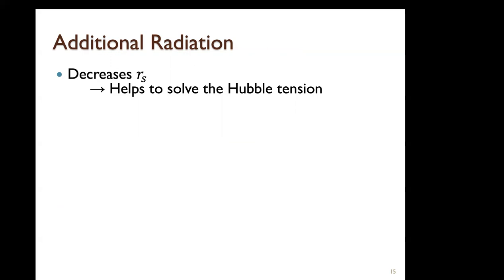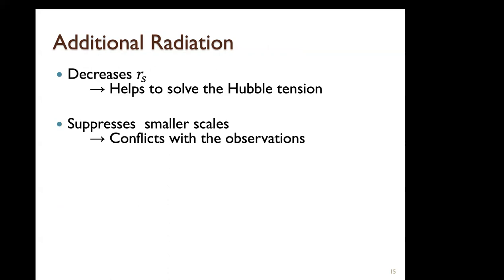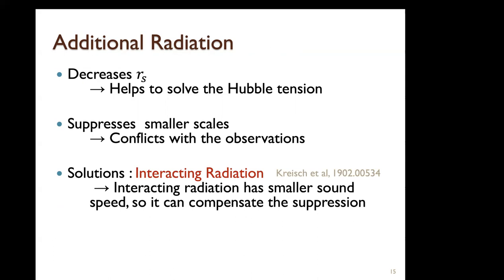However, additional radiation also suppresses small scales, which conflicts with observation. There is a solution: if the radiation has self-interaction, it has a much smaller sound speed (√(1/3)) compared to free-streaming radiation, where perturbations propagate at the speed of light. So interacting radiation doesn't suppress small scales as much as free-streaming radiation. As long as the radiation has tight coupling — whether self-interaction or through the standard model — the sound speed becomes √(1/3), and the effect on small-scale suppression is reduced. So interacting radiation can compensate these effects and may help resolve the Hubble tension.